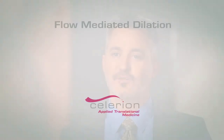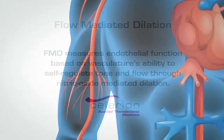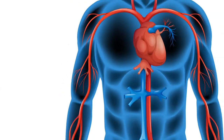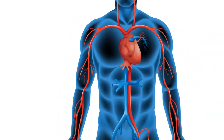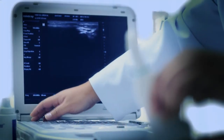Measuring the flow mediated dilation response, or FMD, offers such a signal. FMD is a measure of endothelial function represented by the vasculature's ability to self-regulate tone and flow through nitric oxide mediated dilation. The change in diameter of the brachial artery in response to occlusion-induced hyperemia can be measured non-invasively with an ultrasound.